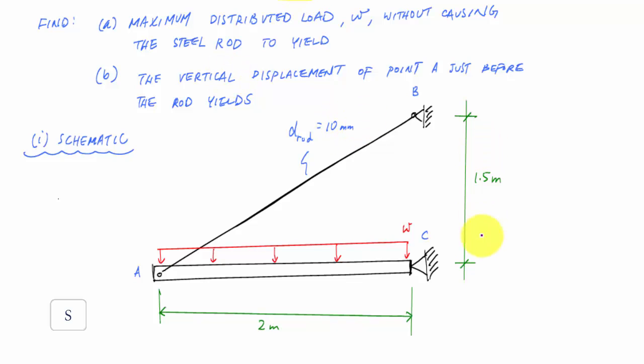And you can probably tell from the dimensions here, I made this nice and convenient. This is a three, four, five triangle, make our calculations a little bit easier. And here's what I have. And I'm trying to find the maximum load W that I can apply on here without this rod yielding.